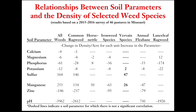The numbers in the middle refer to the change in density for each unit of change. For example, for each part per million increase in phosphorus, you see a decrease of 28 weeds per acre of common ragweed. This data can also show us what nutrients can be more beneficial to weeds — sulfur and manganese actually increase the density of certain weed species. All of these parameters are measured in parts per million except for pH, which is measured as a change of 1, for example going from a pH of 5 to 6.